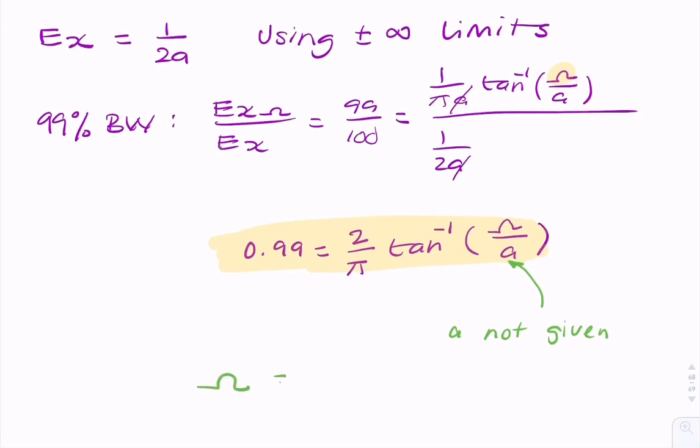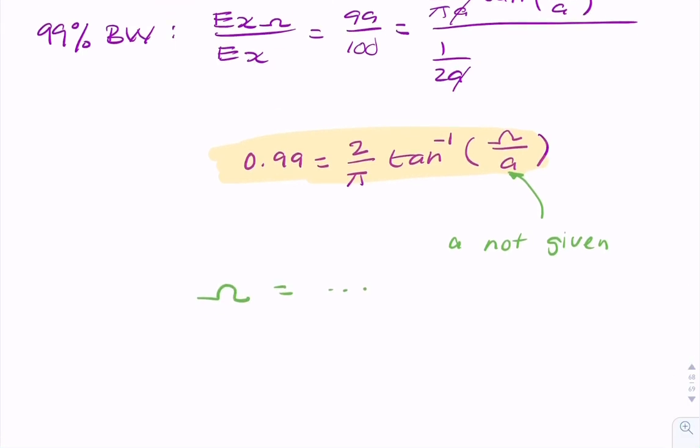So once you've found omega, that would be in radians per second. Typically, we would be looking for the containment bandwidth in hertz. So you would take omega and divide by 2 pi, and that would be your final answer.